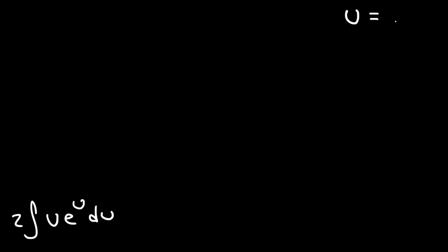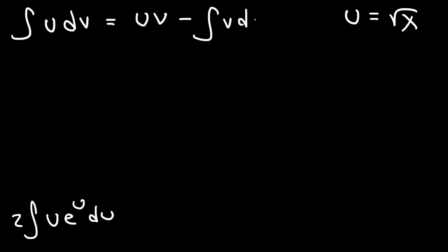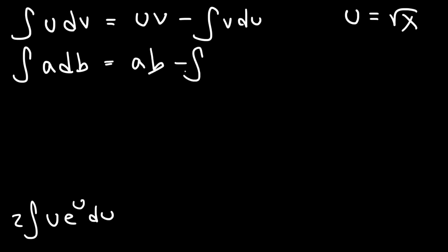Let's rewrite this expression since we'll use it later. Now, what we need to do in order to integrate this expression is use integration by parts. The formula is: the integral of u dv equals u times v minus the integral of v du. Now, I don't want to use the u variable twice, so I'm going to use different letters — let's say u is a and v is b. So we have: the integral of a db equals a times b minus the integral of b da.